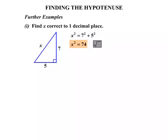We'll take the square root, and we're doing that, x equals the square root of 74, and that works out to be that x equals 8.6. And we've rounded that off to one decimal place.